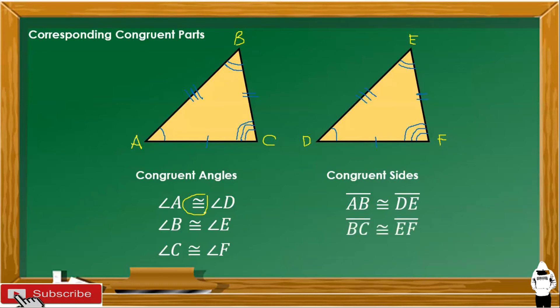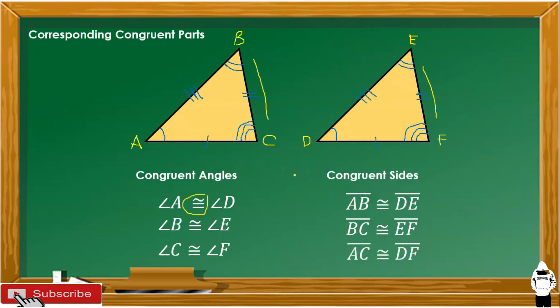Segment BC is congruent to segment EF. Those are the corresponding angles and corresponding sides between these two triangles.